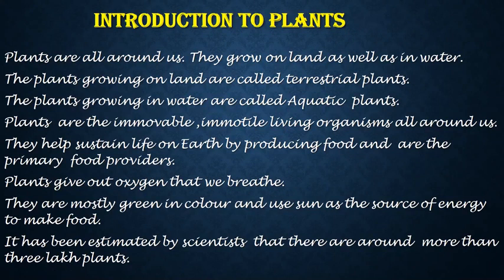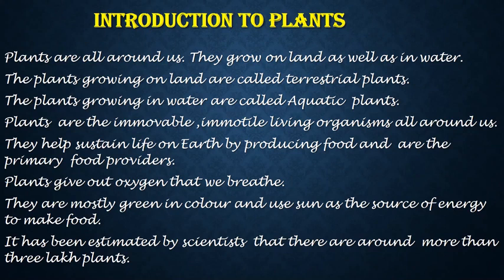Introduction to plants. Students, you all know that plants are all around us. They grow on land as well as in water. The plants growing on land are called terrestrial plants. The plants growing in water are called aquatic plants. Plants are immovable, immotile living organisms all around us. They help sustain life on earth by producing food and are the primary food producers. Plants give out oxygen that we breathe during the process of photosynthesis. They are mostly green in color and use the sun as a source of energy to make food. It has been estimated by scientists that there are around more than three lakh plants.